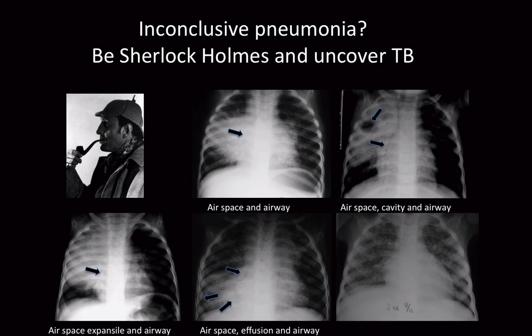In my last image of the day: TB isn't just made by lymphadenopathy, which I may have led you to believe. If you see bilateral nodules much like stars in the sky, that's miliary TB. You're probably right making the diagnosis in these conditions too.